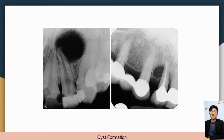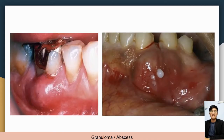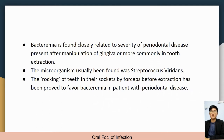This is the picture of cyst formation in the radicular part of the tooth — the radicular cyst and radicular granuloma — and also the dental abscess. In oral focal infection, bacteremia is closely related to the severity of periodontal disease, present after manipulation of the gingiva or more commonly in tooth extraction. The microorganism usually found was Streptococcus viridans. The rocking of teeth in their sockets by forceps before extraction has been proved to favour bacteremia in patients with periodontal disease, allowing bacteria to enter the systemic circulation through hematogenous spread.